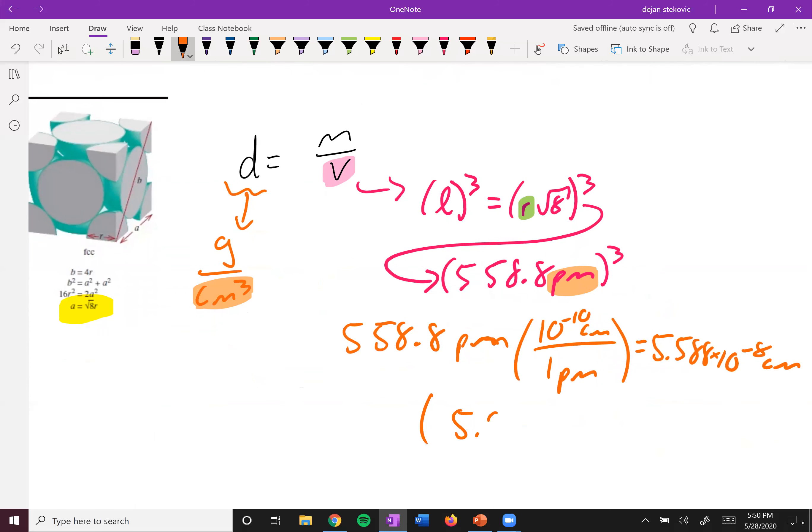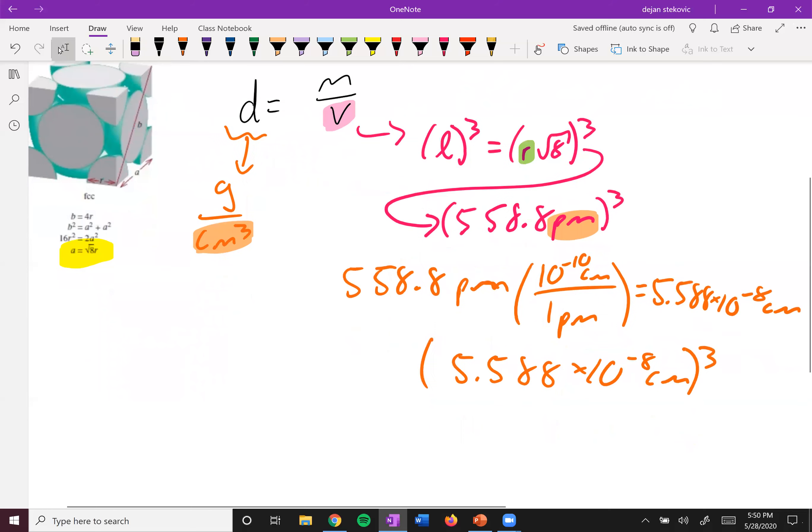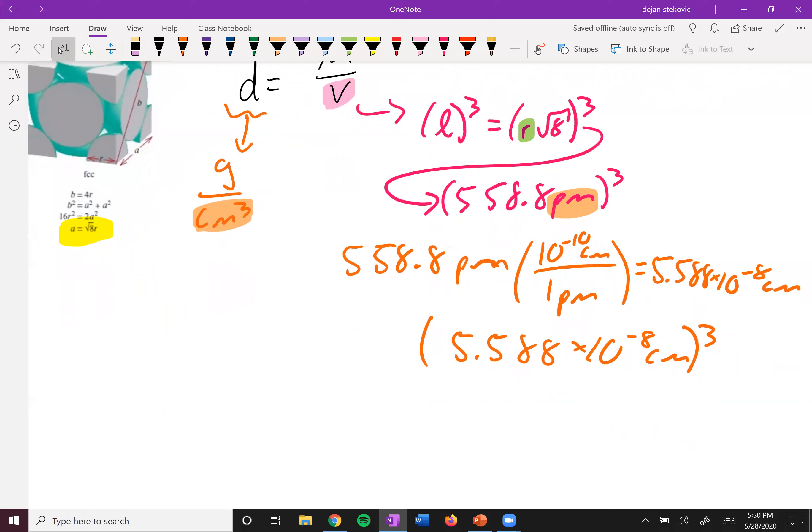Take that, plug that into a calculator, and then you get a final number of 1.745 times 10 to the negative 22 centimeters cubed. And so finally, we can take this and plug this into this volume portion.